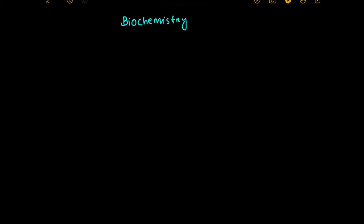So now we are going to discuss about the biochemistry of the ABO blood group system. This video consists of the biochemistry portion: how the ABO blood group system works. We know that there are four types of blood groups in the human body: A, B, AB, and O.